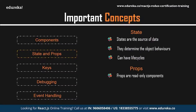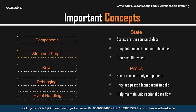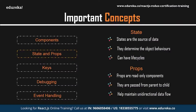Props is shorthand for properties in React. They are read-only components that must be kept pure, or immutable, and are always passed down from parent to child components. The user changes the parent component's state, and changes are passed to the child through props. A child component can never send a prop back to the parent, maintaining unidirectional data flow. Props are generally used to render dynamically generated data.